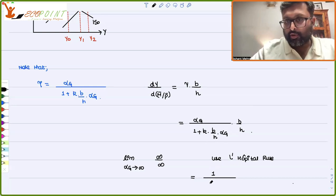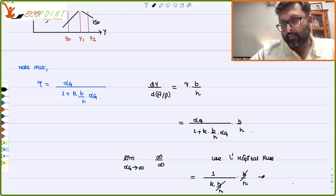What will you get when you differentiate numerator with respect to alpha G? 1. What about the denominator? K into B by H. This is what you are going to get. Into B by H. This will get cancelled. And you will have 1 by K.